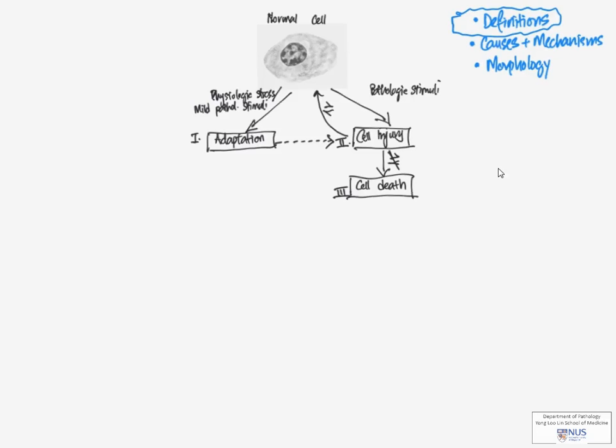Let's start off by looking at definitions. Beginning with adaptation, this is defined as reversible functional and structural responses to stress. What happens is that the cell reaches a new steady state, and in this steady state, this allows the cell to survive and to continue in its cellular functions.